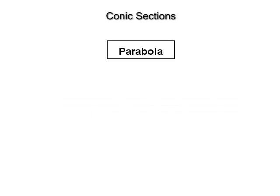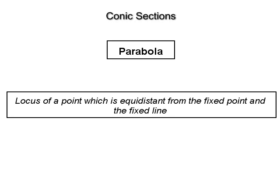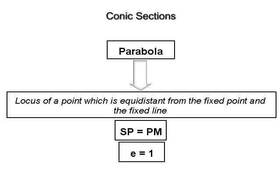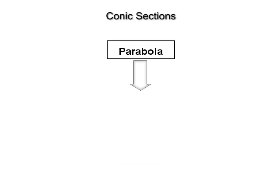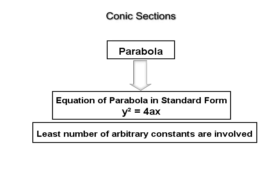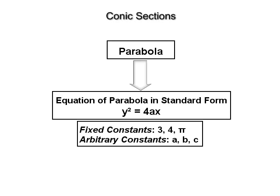The first conic is the parabola. A parabola is defined as the locus of a point which is equidistant from the fixed point and the fixed line, that is SP = PM. In other words, a parabola is a conic whose eccentricity is 1. The equation of a parabola in standard form is y² = 4ax. An equation is in standard form if the least number of arbitrary constants is involved. There are two types of constants: fixed constants like 3, 4, and π, and arbitrary constants like a, b, c whose values are not fixed.